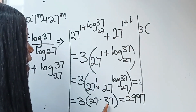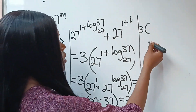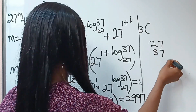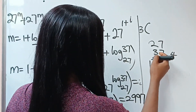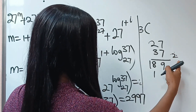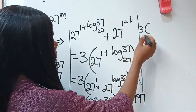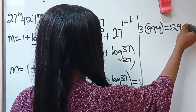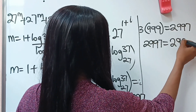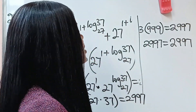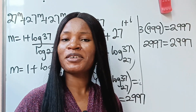Let's complete the arithmetic: 3 times 27 times 37. First, 27 times 37: 7 times 7 is 49, carry 4; 7 times 2 is 14 plus 4 is 18; 3 times 7 is 21, carry 2; 3 times 2 is 6 plus 2 is 8. So 27 times 37 equals 999. Then 999 times 3 equals 2997. This equals 2997, which confirms our answer is correct!